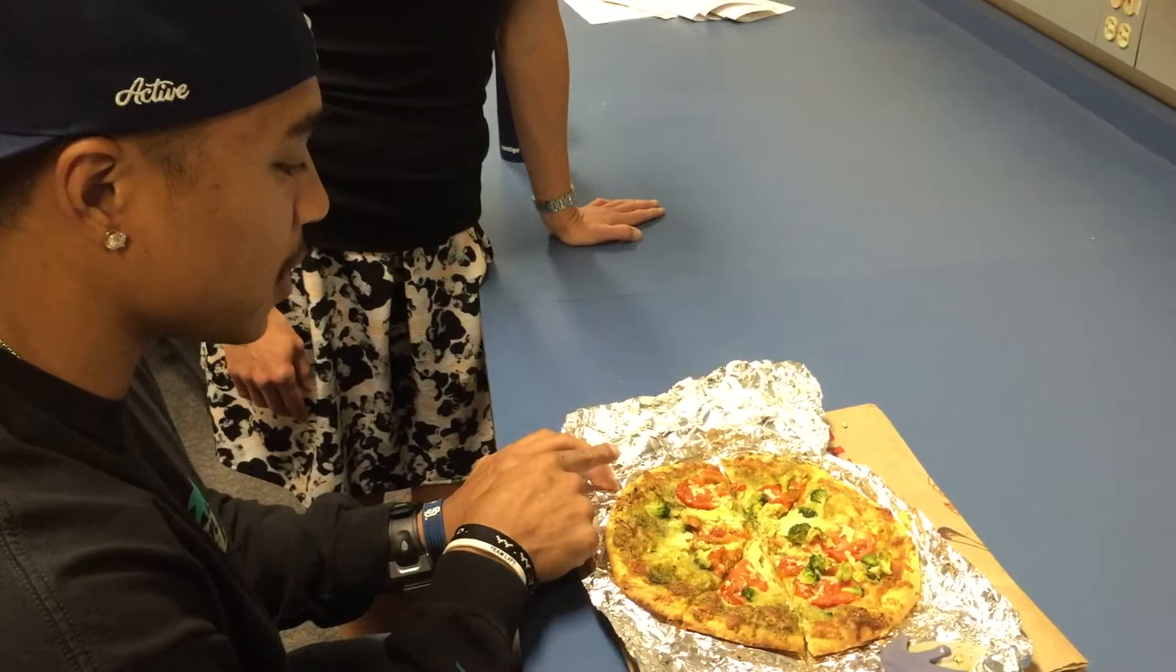So find out how many pieces you would equally get. Four for me, and then one, two, three, four for Juan.